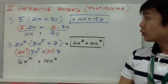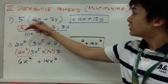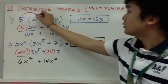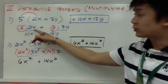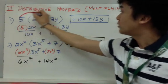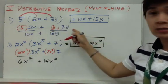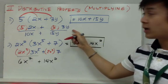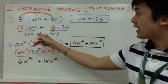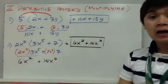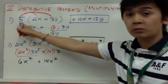So I have 5 times (2x + 3y). I will distribute 5 to 2x, so I have 5 × 2x, and I will distribute 5 to 3y, so I have 5 × 3y. Simplifying my polynomial, I'll have 10x + 15y. That's how you multiply a monomial with a binomial.